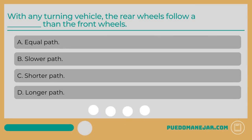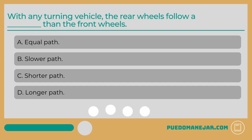With any turning vehicle, the rear wheels follow what path compared to the front wheels? A: equal path. B: slower path. C: shorter path. D: longer path.